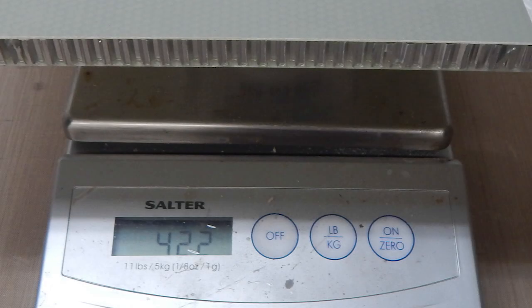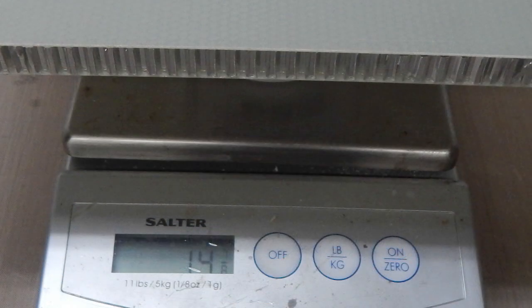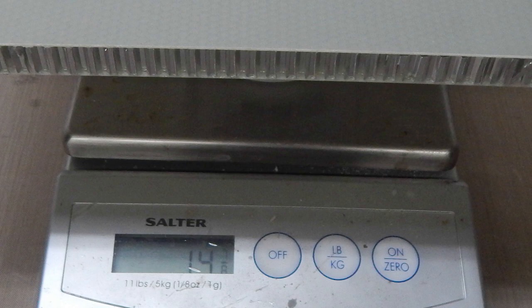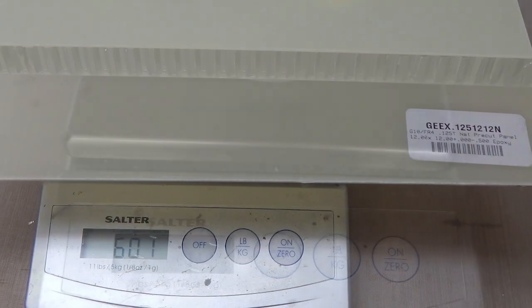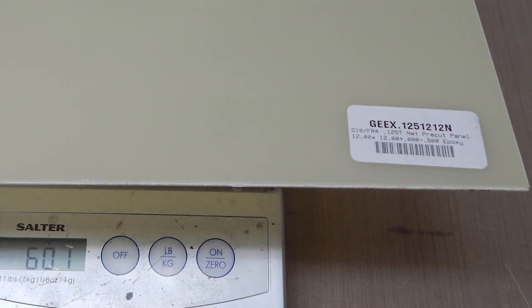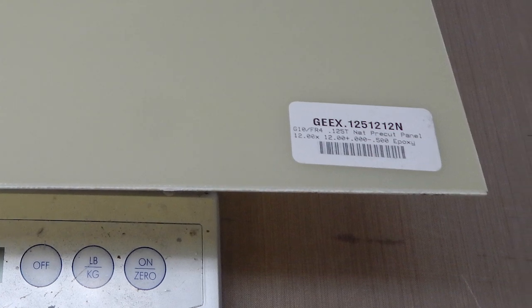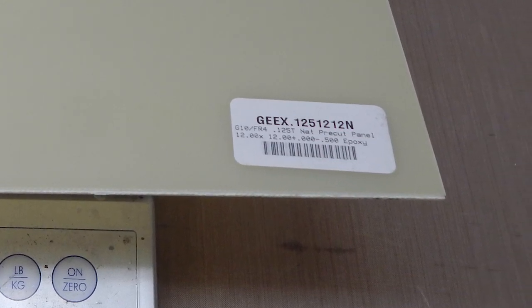But that one square foot piece weighed 422 grams for about 14 and 7/8 ounces. And comparing that to a piece of 1/8 inch G10, that's substantially lighter and way stiffer.